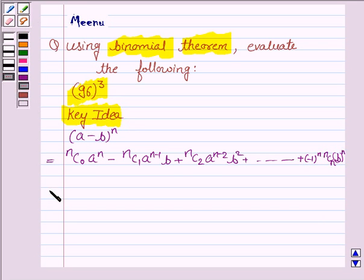Let us now start the solution. 96 can be written as 100 minus 4, so 96 to the power 3 equals (100 - 4) to the power 3.